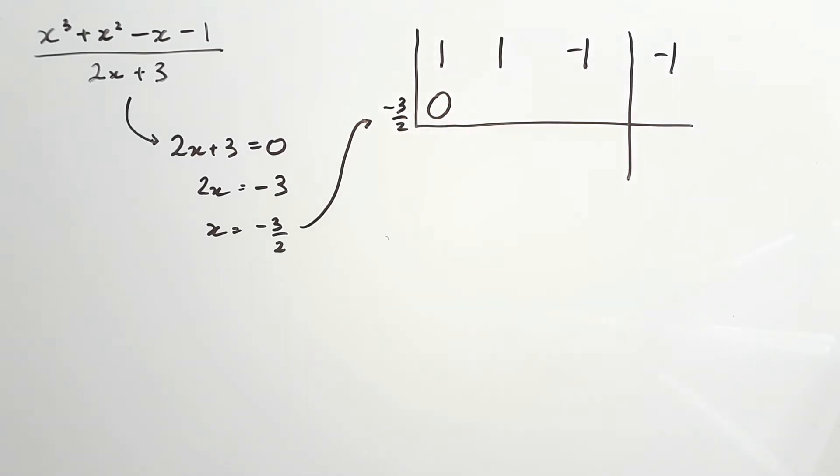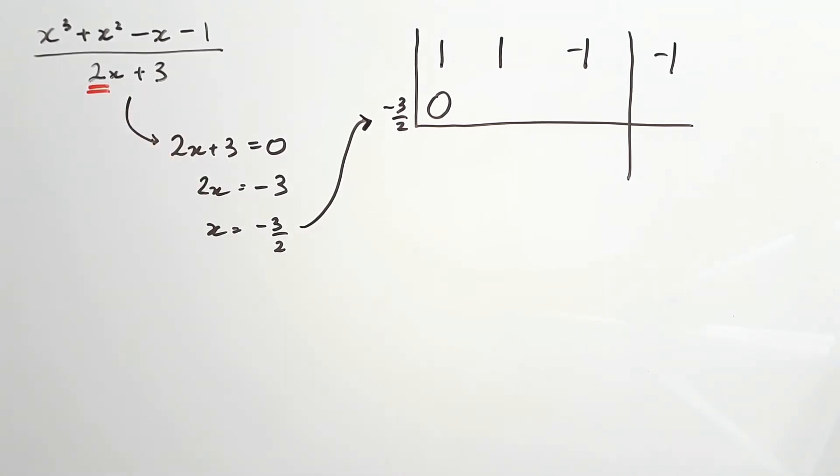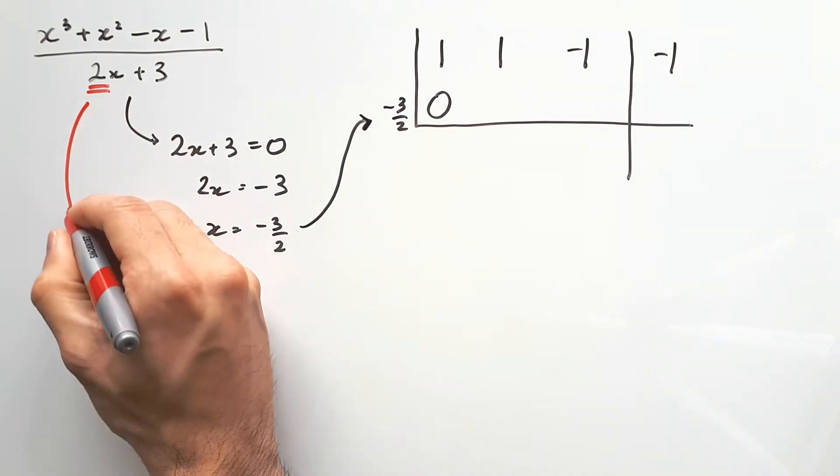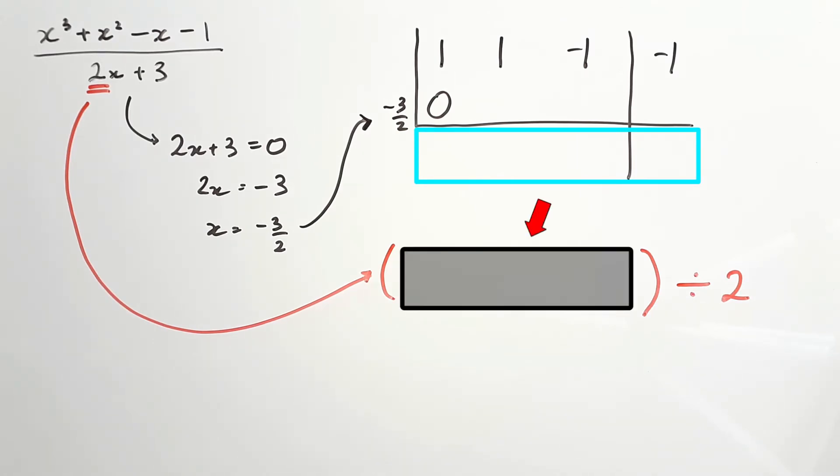And here's the special move where we turn a non-monic into a monic. Take the 2 at the front of the x, the thing that's making it non-monic, and divide your answer by 2. So whatever you're going to find in your synthetic division, you'll need to take that and divide by 2 later.